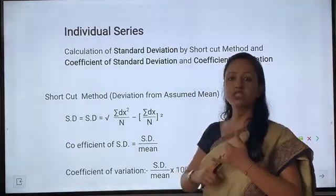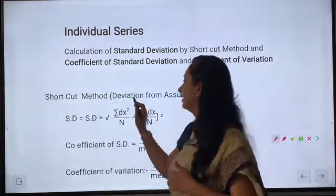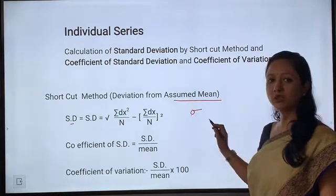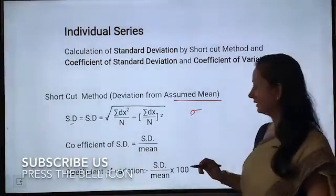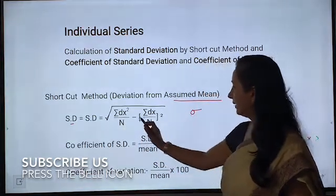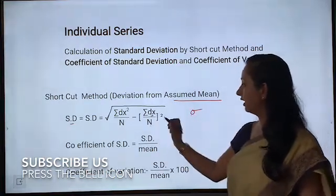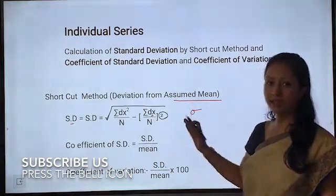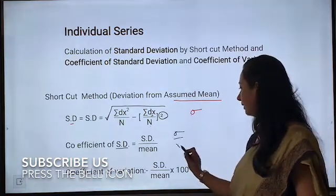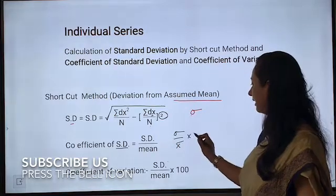Formulas of standard deviation, coefficient of standard deviation, and coefficient of variation in individual series by shortcut method. SD (sigma) is the symbol of standard deviation. The formula for SD is: square root of [sum of dx² divided by n minus (sum of dx divided by n) whole squared]. Coefficient of SD equals SD divided by mean, i.e., sigma divided by x-bar. Coefficient of variation is SD divided by mean into 100, i.e., sigma divided by x-bar into 100.